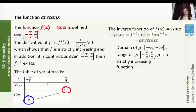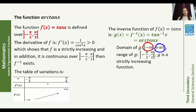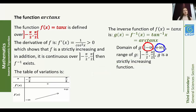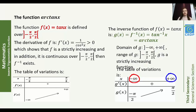The inverse function of f(x) = tan(x) is g(x) = f⁻¹(x), denoted arc tan x. The domain of g is f((−π/2, π/2)) = (−∞, +∞). The range of g is the open interval (−π/2, π/2). Since f is strictly increasing, g is also strictly increasing. Table of variations of g: x ∈ (−∞, +∞), g' is positive, and g(x) varies from −π/2 strictly increasing towards π/2.